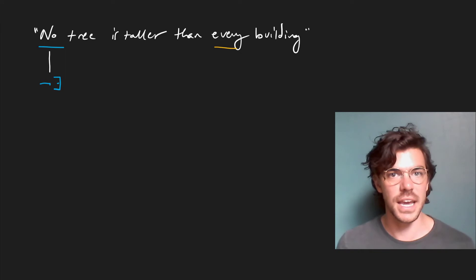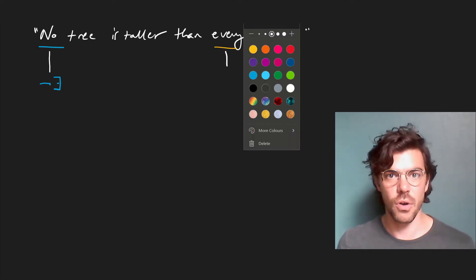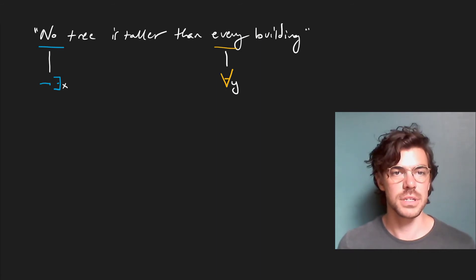And 'every' over here is just the same as our 'for all.' So we've isolated our two quantificational terms. Now the question is just finding the appropriate predicates and connectives. So we'll say tree, that's fine.